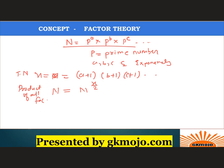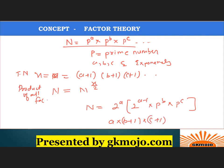Sometimes a question will ask for the total number of even factors or total number of odd factors. For even factors, write N as 2^a × P2^b × P3^c, and the total number of even factors will be a × (b+1) × (c+1). For odd factors, just calculate total factors minus total even factors.